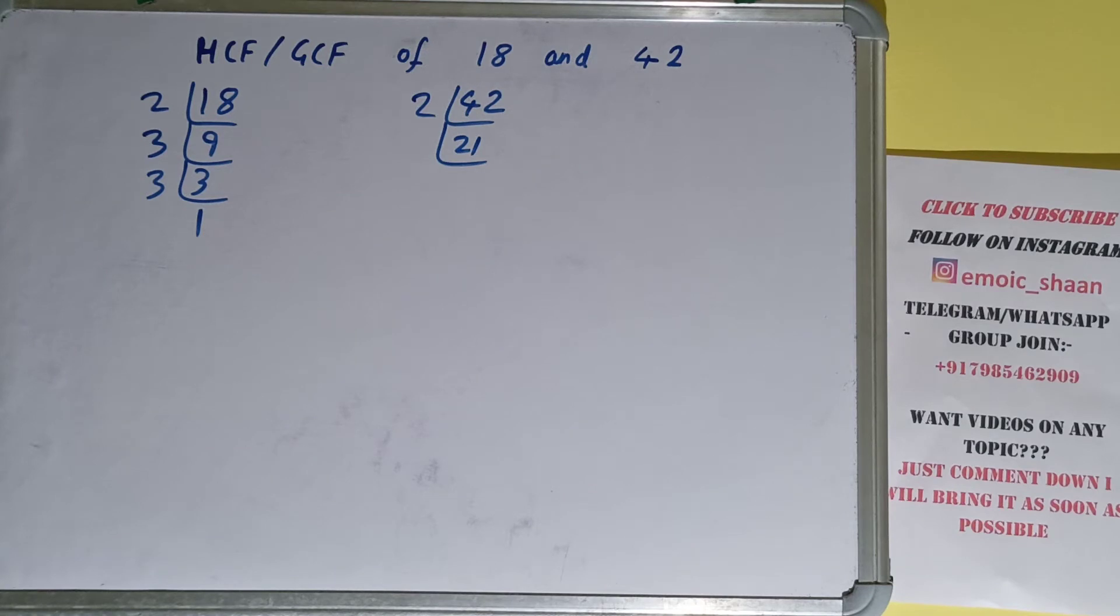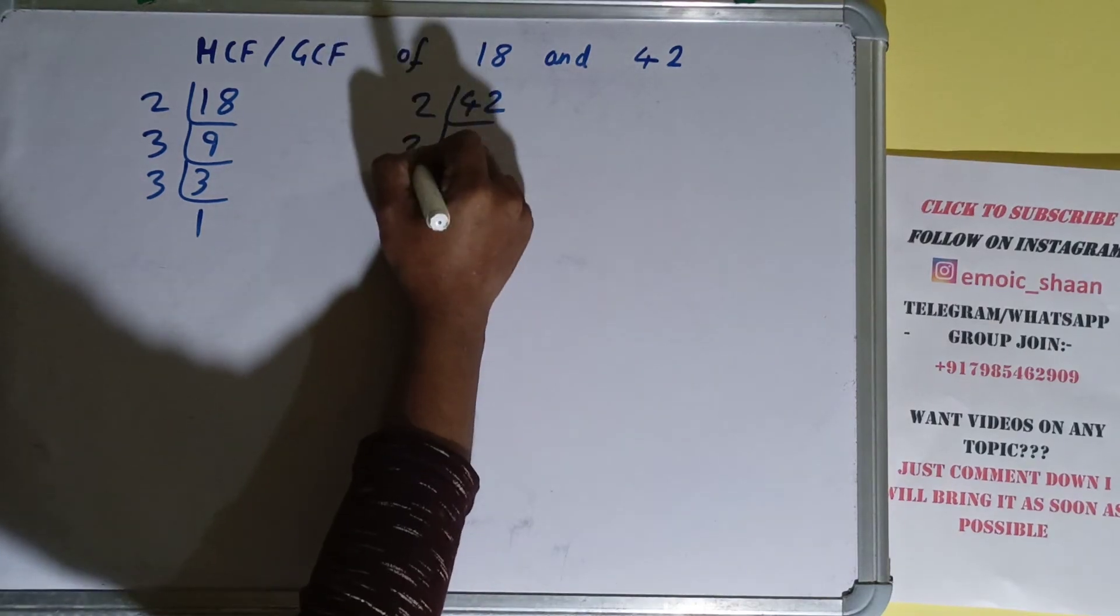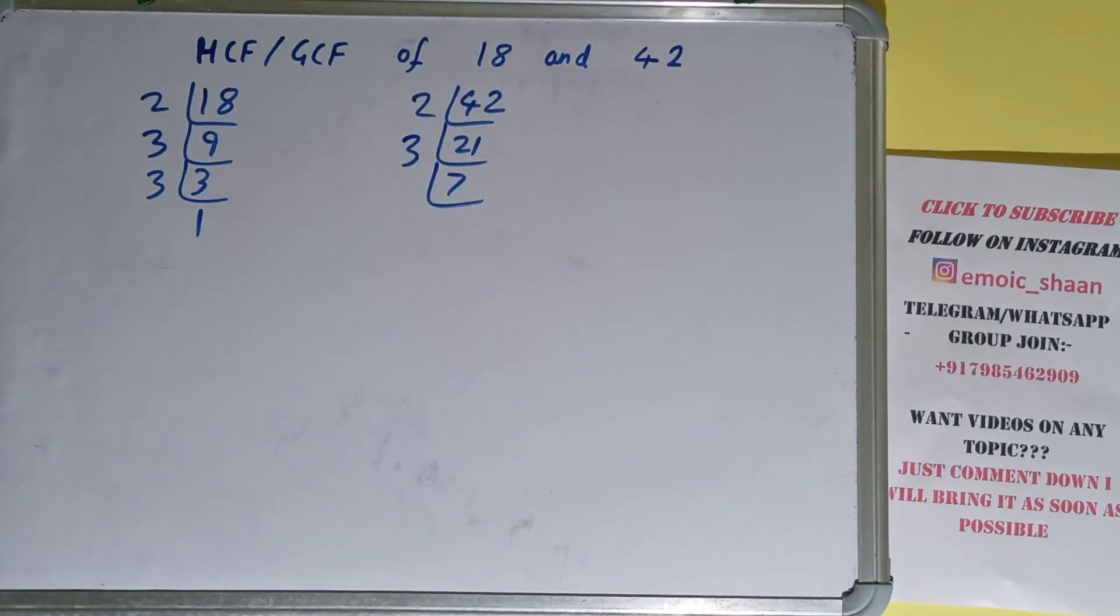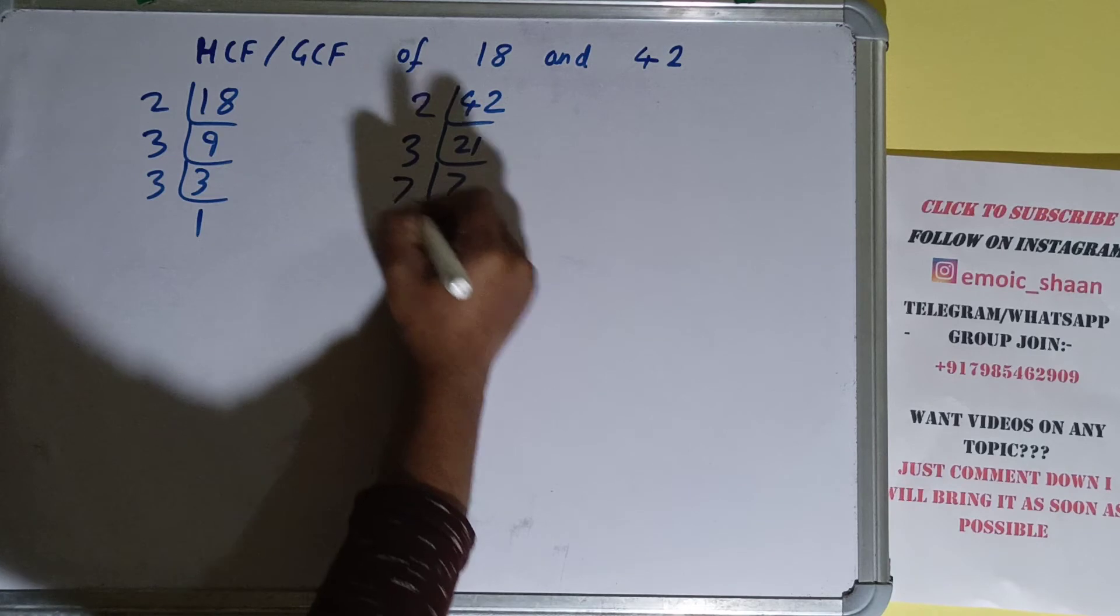Is 21 divisible by 3? Yes it is, and we'll have 7. Is 7 divisible by 3? No. 7 is a prime number, so it is only divisible by itself, and we'll have 1. So we are done with the prime factorization step.